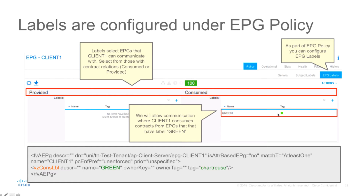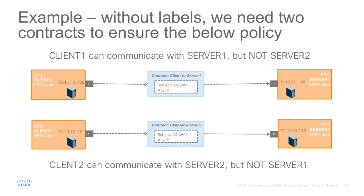Let's look at an example of when this can be useful. Let's imagine this scenario where we have four EPGs: client 1, client 2, server 1, and server 2. Our policy should be such that client 1 can communicate with server 1 and client 2 can communicate with server 2. However, client 1 cannot communicate with server 2, and vice versa, client 2 cannot communicate with server 1.